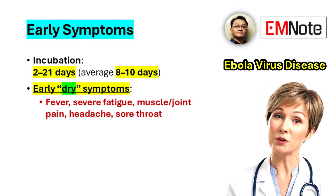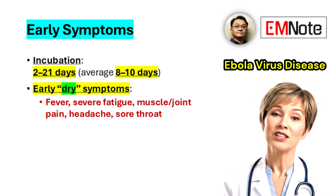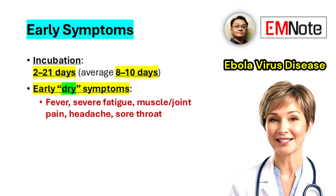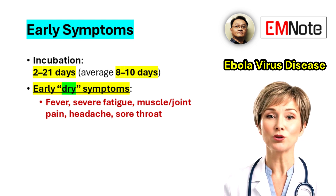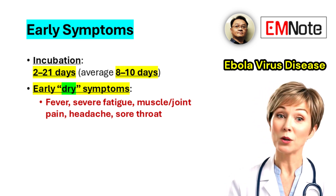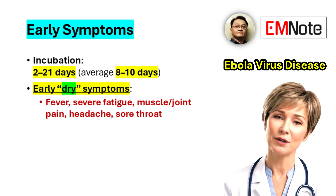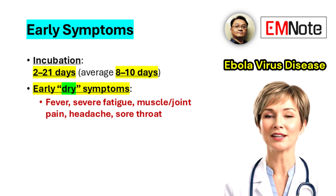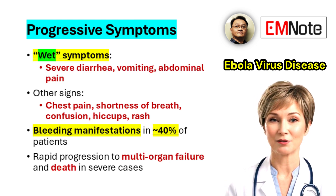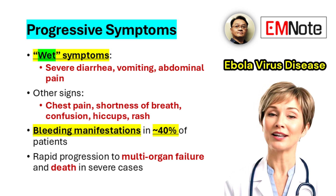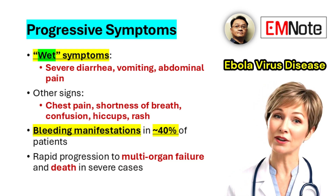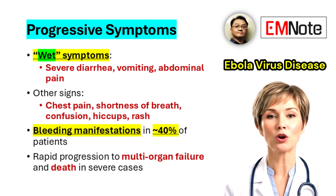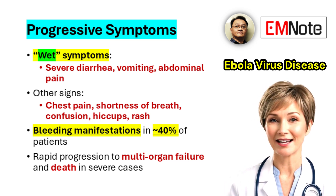The incubation period of Ebola virus disease ranges from 2 to 21 days, with an average of 8 to 10 days. Early symptoms are nonspecific and may resemble other tropical diseases such as malaria or typhoid fever. Initial symptoms typically include the sudden onset of fever, profound fatigue, muscle and joint pain, headache, and sore throat. As the disease progresses, gastrointestinal symptoms often develop, including severe watery diarrhea, nausea, vomiting, and abdominal pain.